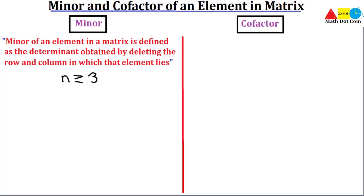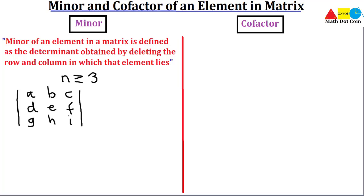When the order of the matrix is greater than or equal to 3, you need to use the minor and cofactor to find the determinant of a matrix. We are not going to find the determinant here — just the concept of minor and cofactor. We will start with a general example using a general matrix without specific values.